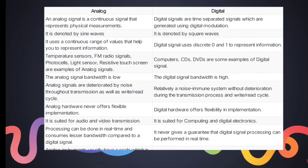An analog signal is a continuous signal while digital signals are time-separated signals. Analog is represented by a sine wave and digital is denoted by a square wave. Analog signals use a continuous range of values to represent information, whereas digital signals use only zeros and ones. Examples of analog signals include temperature sensors, FM radio signals, photo cells, light sensors, and resistive touchscreens. Examples of digital signals include computers, CDs, and DVDs.